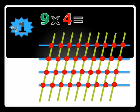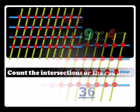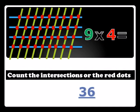We have nine times four. So you rule nine lines straight and then across you rule four lines. Then you count the intersections, or the dots where the lines meet. Nine times four — you arrive at the answer 36. When you count all the dots, you arrive at the answer 36.